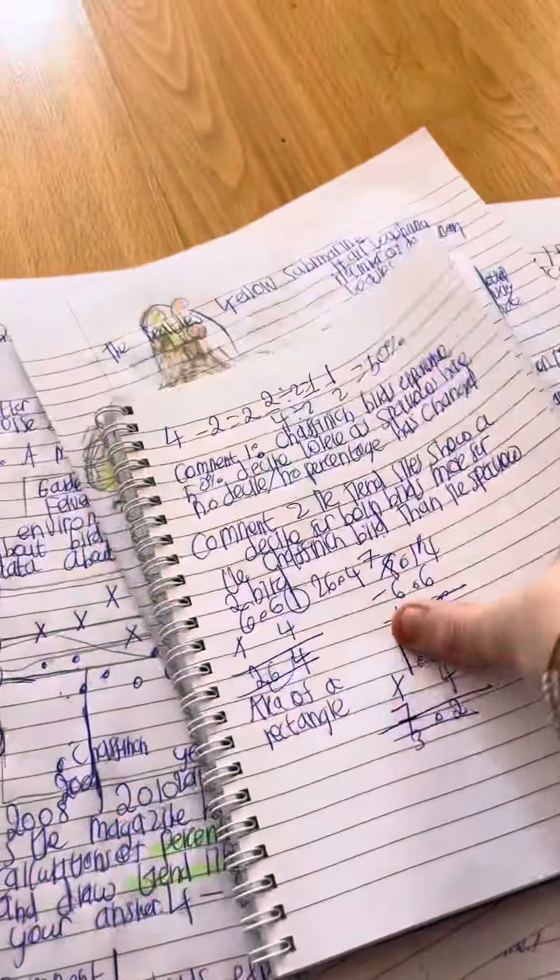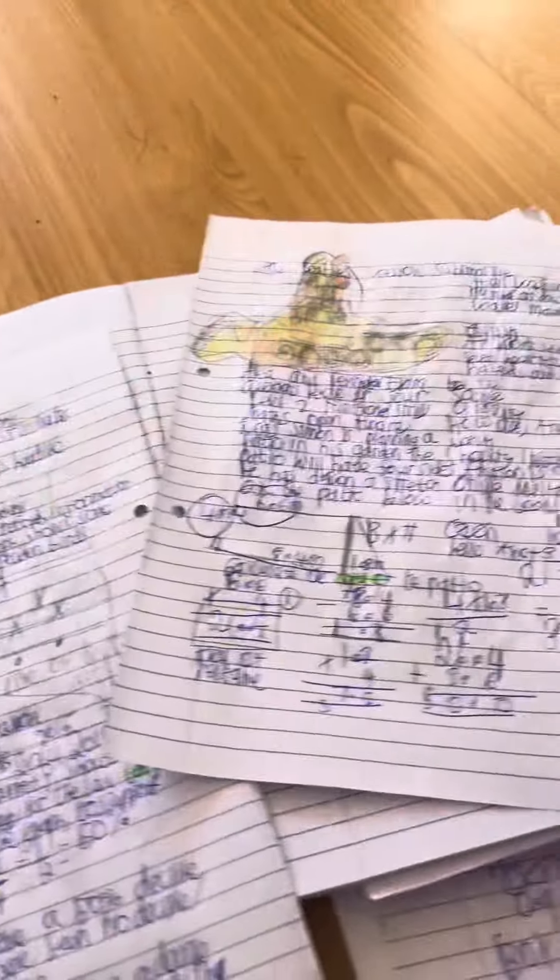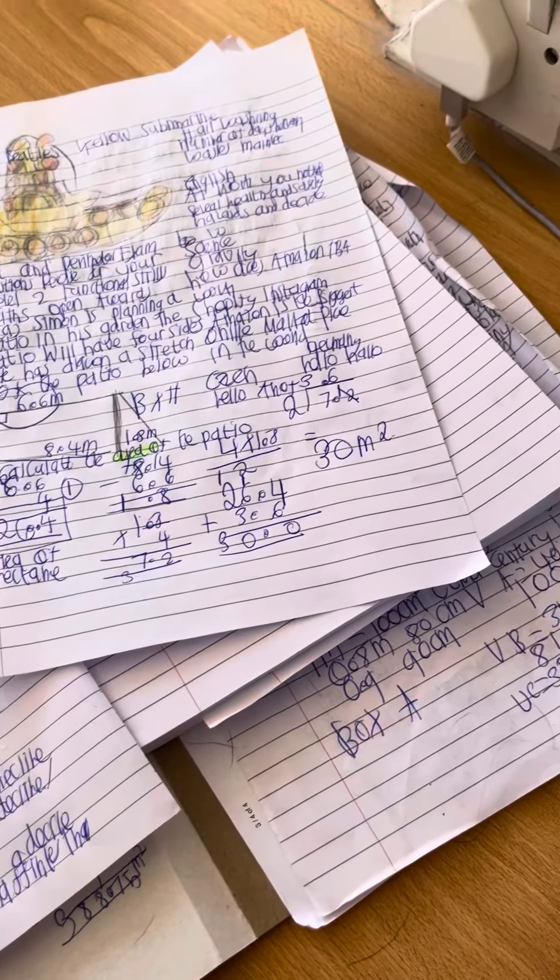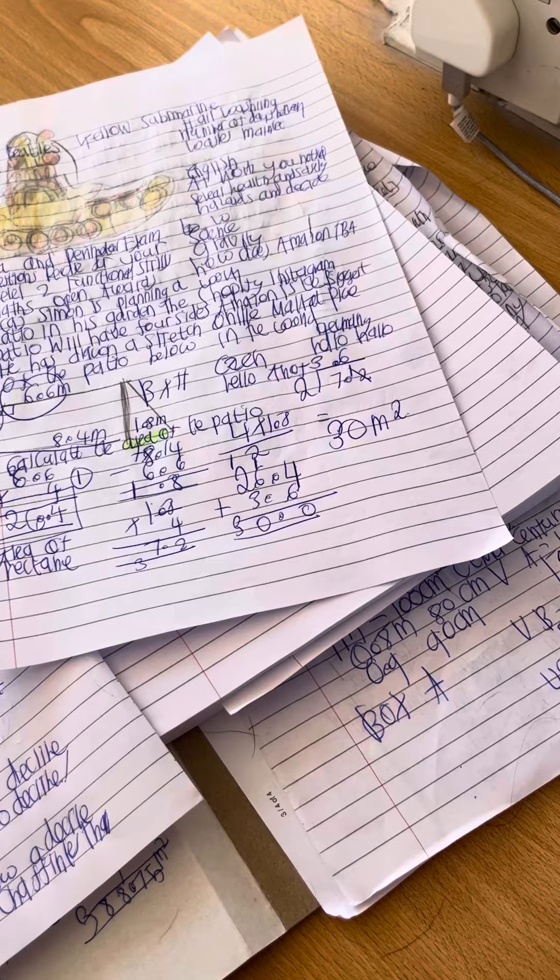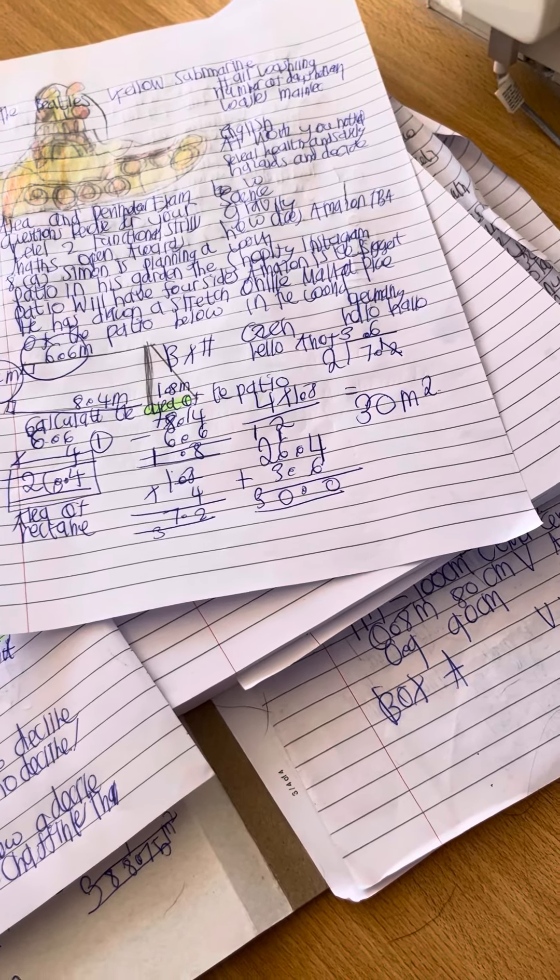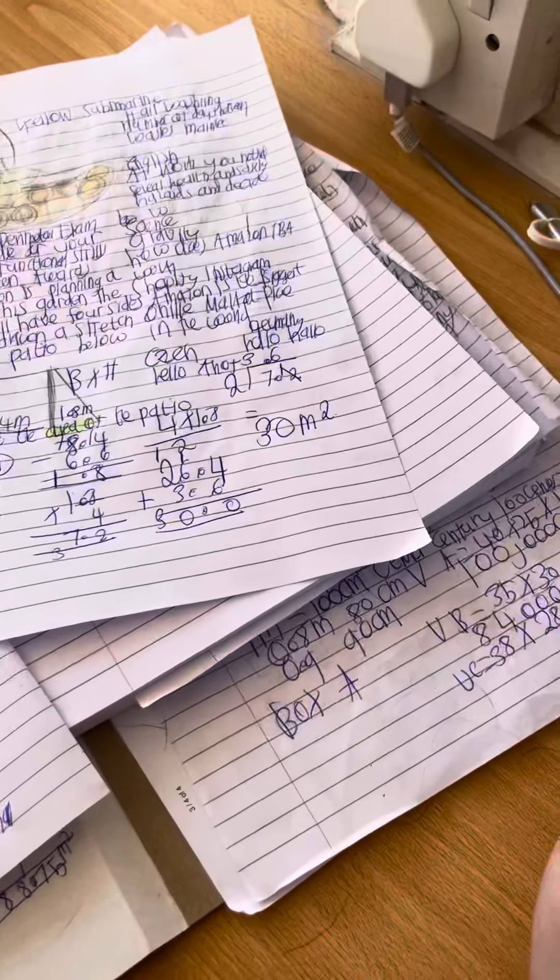Then we need to do half of 7.2 now. So if we do 2 is into 7, that would be 3, because 2 times 3 is 6. So that's going to be 6 from under 1. Then 2 is into 12. So 12 divided by 2 is 6. So the answer is going to be 3.6.